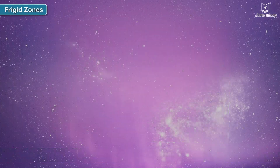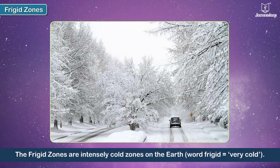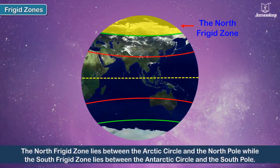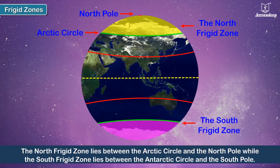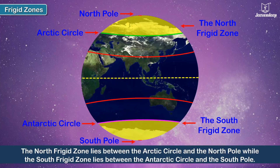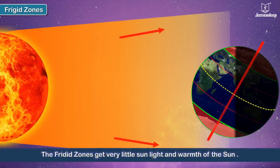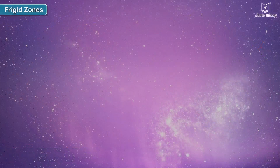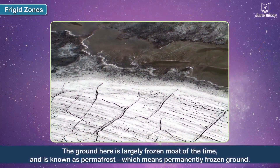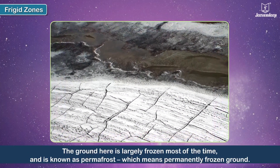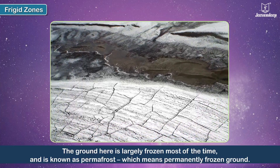The Frigid Zones are intensely cold zones on the Earth. The word 'frigid' means very cold. The North Frigid Zone lies between the Arctic Circle and the North Pole, while the South Frigid Zone lies between the Antarctic Circle and the South Pole. Being at the poles, the Frigid Zones get very little sunlight and warmth. The ground here is largely frozen most of the time and is known as permafrost, which means permanently frozen ground.